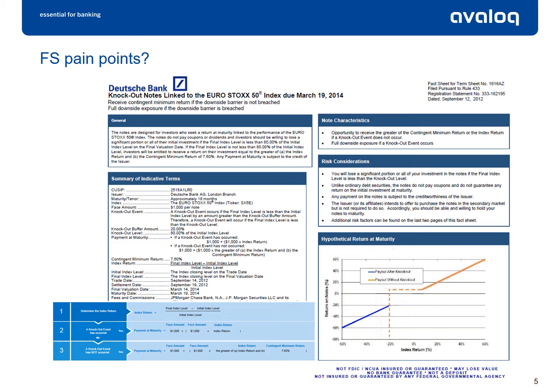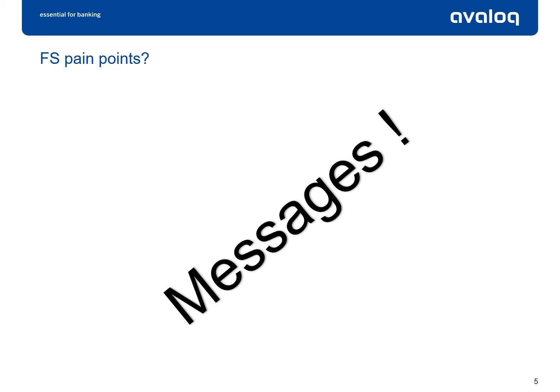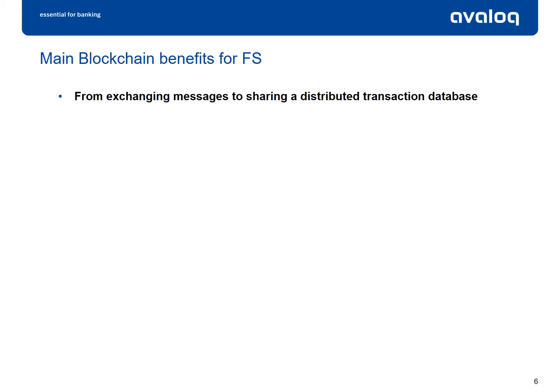What do those use cases have in common? They share the extensive use of messages to synchronize together the different parts of the ecosystem. These messages are sent to notify the counterpart system of a change. Because data is duplicated in different places, there is no guarantee that those places are in sync. Therefore, we need reconciliation between systems to make sure that the different parties are not out of sync. The main benefit the blockchain infrastructure brings is that by design, the database is shared — there is no duplication anymore.